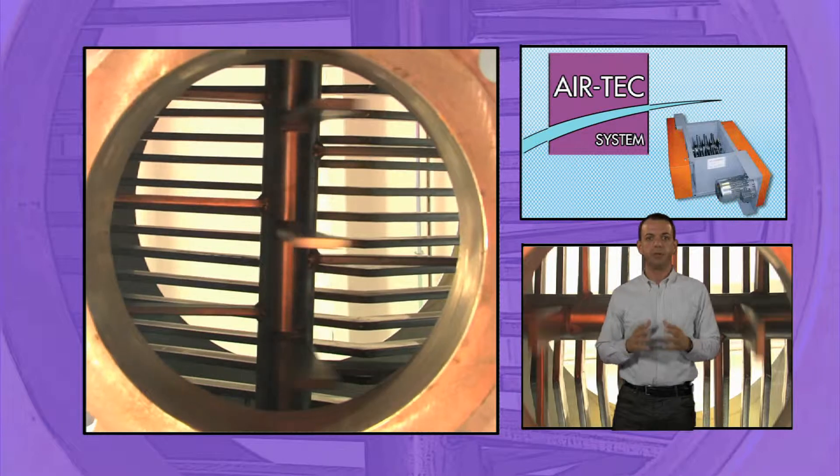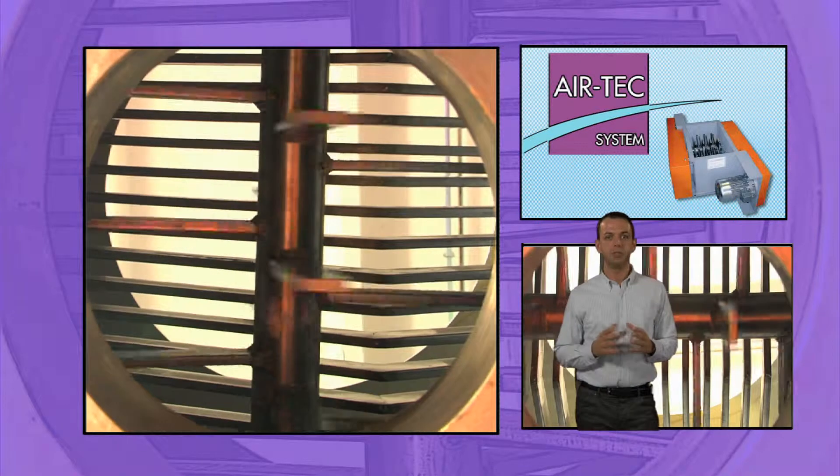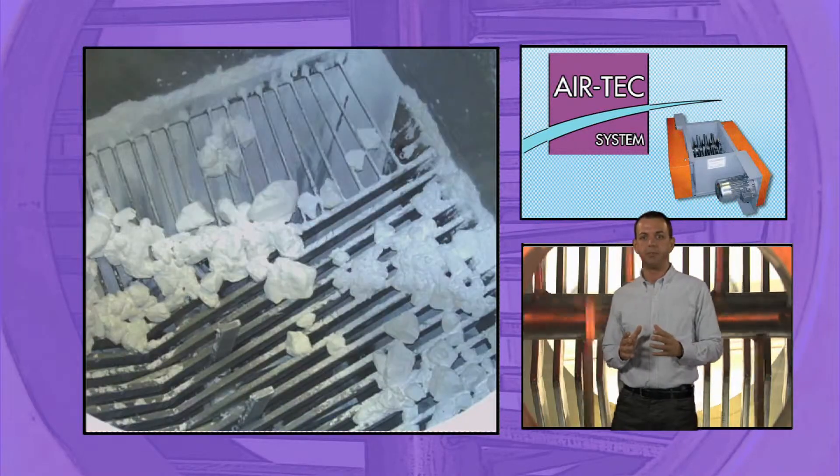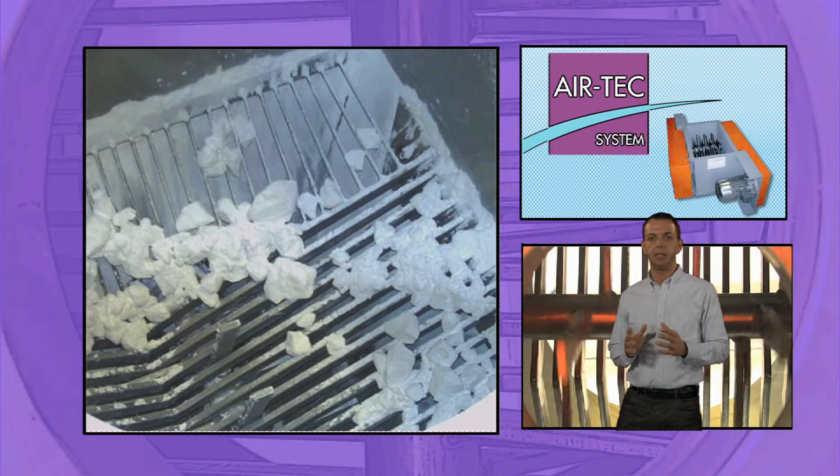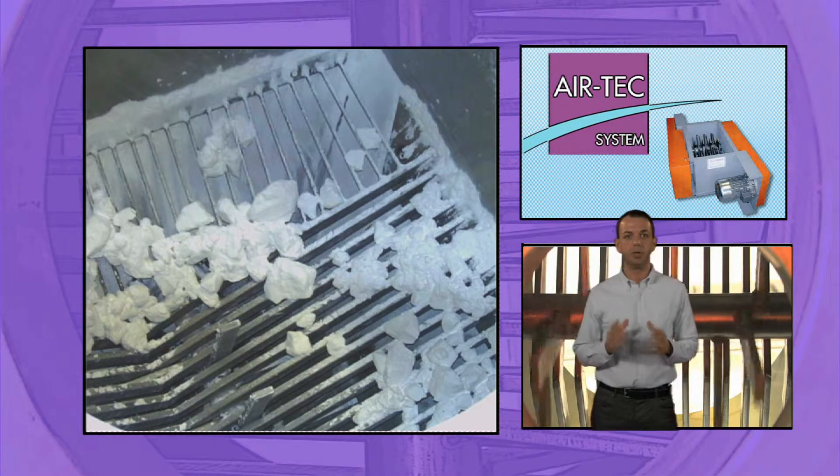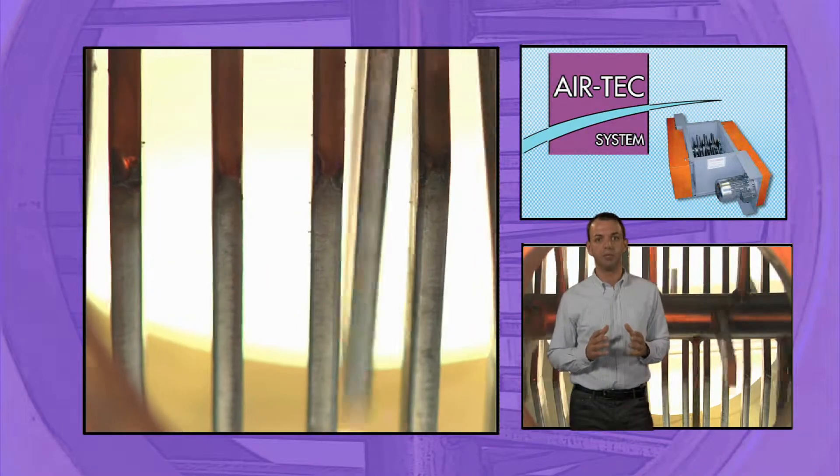The Clodder version of the Lump Breaker systems breaks up accumulations of material that form during the storage phase. They are particularly useful for hygroscopic materials or for those materials that have a tendency to form lumps,